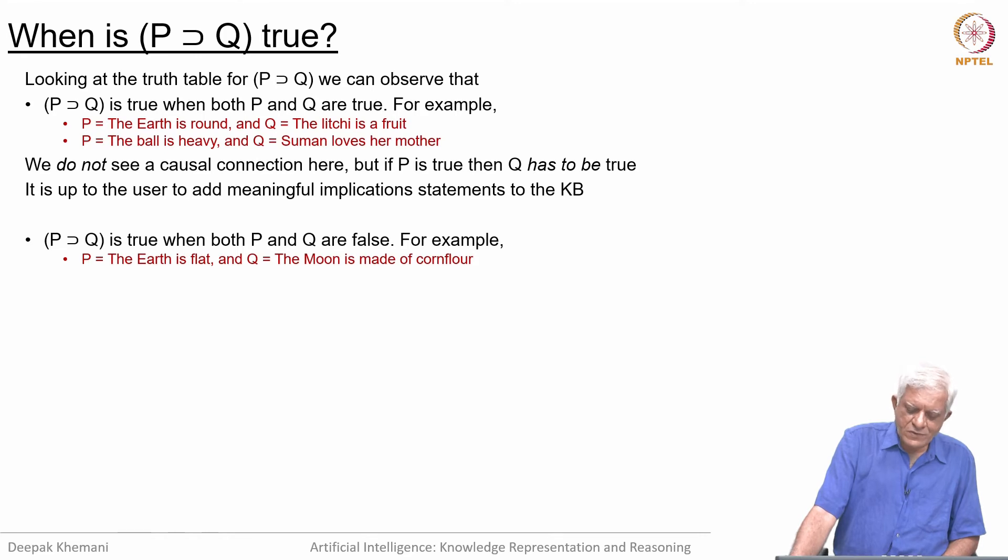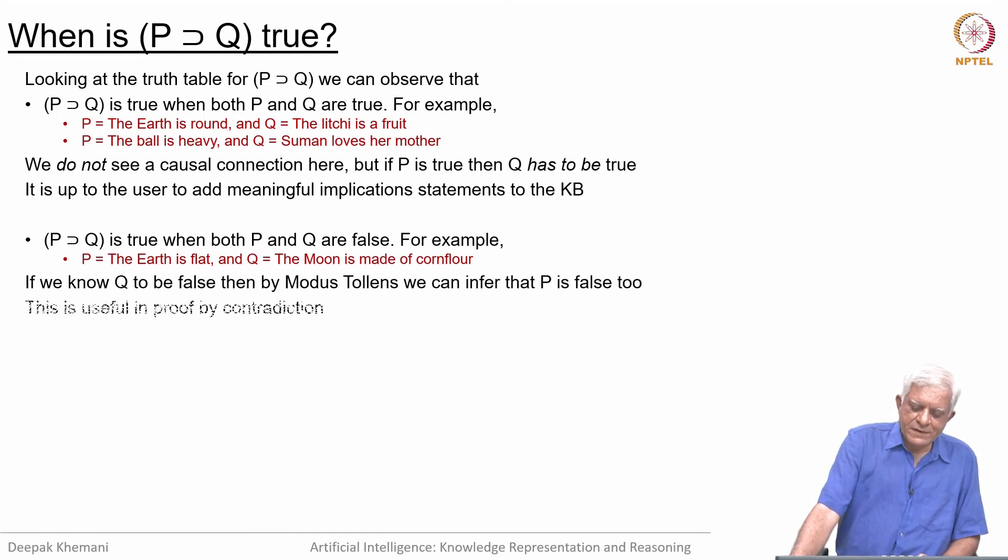P implies Q is also true when both P and Q are false. This is as per the truth table that we have been looking at. For example, the earth is flat and Q is the moon is made of corn flour. If we know Q to be false, we can use P implies Q to infer that P also must be false. And we do that when we use the rule of Modus Tollens, which says that given P implies Q and given not Q, you can infer not P. It is also used in the proof by contradiction as we have seen.